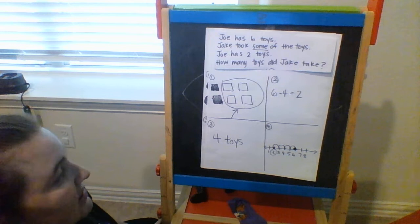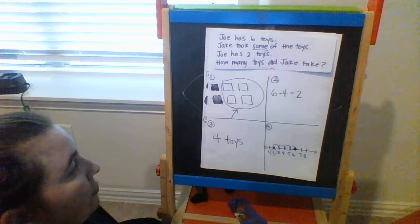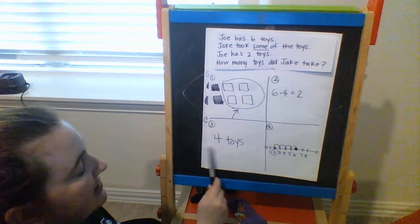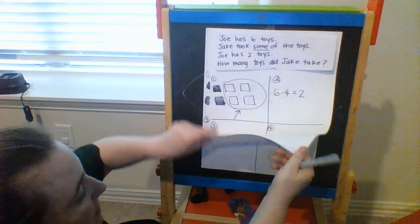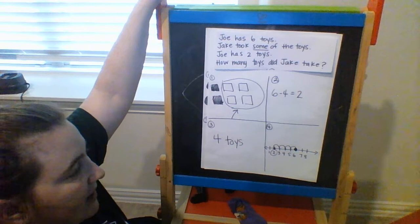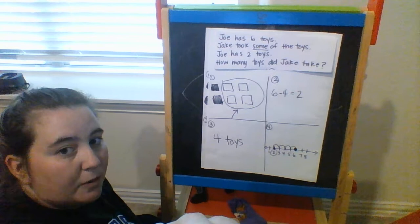So remember, when you're using your problem solving checklist, you are going to draw a picture to match what happened, write a number sentence that shows what your picture is showing, pay super close attention to what the question is asking and make sure you're giving the right number for your answer, and then prove it by using a number line or a number bond to prove that you were able to get the answer correct. Good job, thanks for listening, and I can't wait to see the different pictures and number sentences that you upload into school.